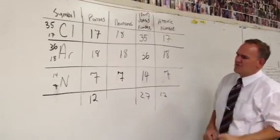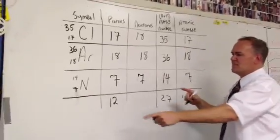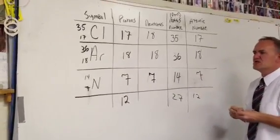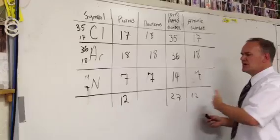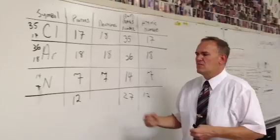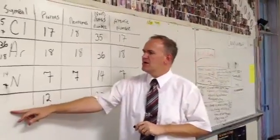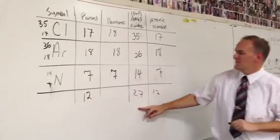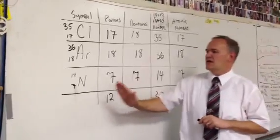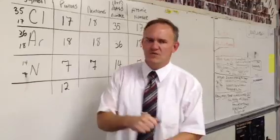For this last example, I'm going to stop and you need to work it out. The proton number is 12, the mass number is 27, and the atomic number is 12. See if you can figure out what should go in the remaining boxes. If you can, you'll be ready for the homework. You'll have the rest of class to work on that. Thank you and have a great day.